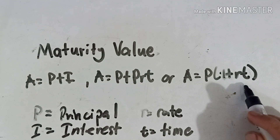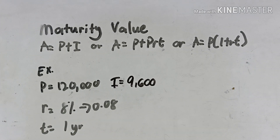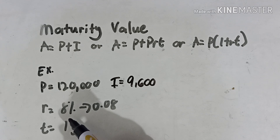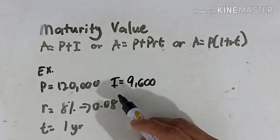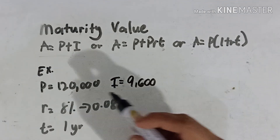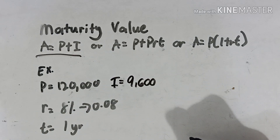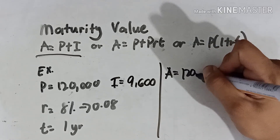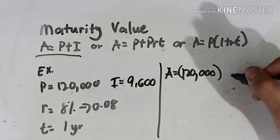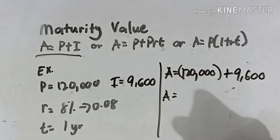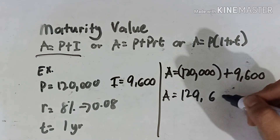Let's have an example. We have a given principal amount of 120,000, a rate of 8% or 0.08, a time of 1 year, and an interest I of 9,600. Since there is a given value for P and I, we use the formula A = P + I. So A equals 120,000 plus 9,600, giving us a maturity value of 129,600.